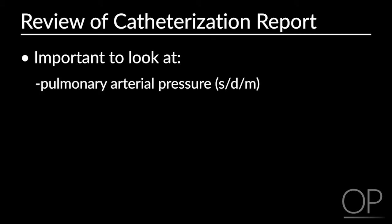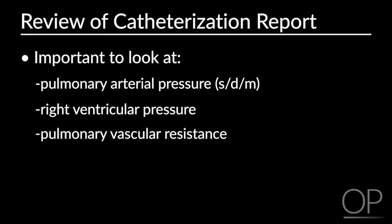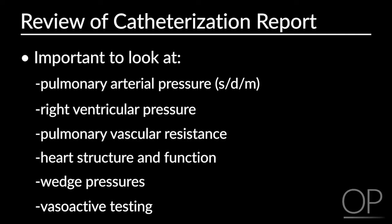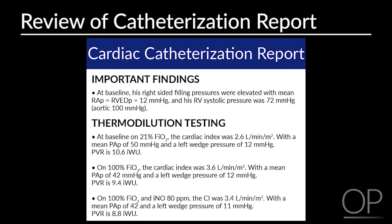On catheterization reports, it is important to look at pulmonary arterial pressure — systolic, diastolic, and mean levels — as well as right ventricular pressure, pulmonary vascular resistance, cardiac structure and function, measured wedge pressures, and results of vasoactive testing. For our sample patient, his cath report indicated that at baseline, right ventricle systolic pressure was 72 mmHg and systemic pressure was 100 mmHg, meaning his RV pressure is greater than one-half systemic, placing him at greater risk for complications during general anesthesia.